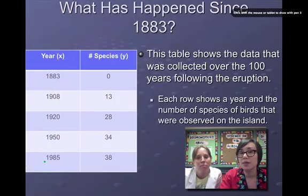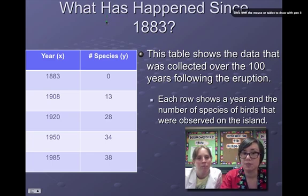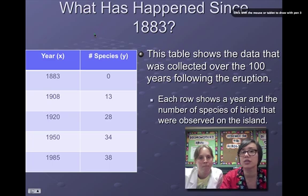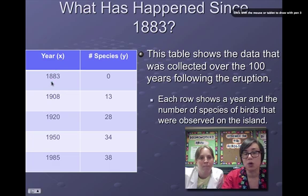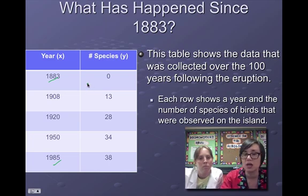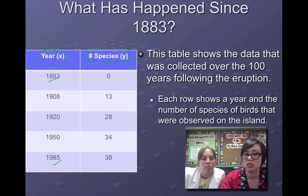Here's a data table. Data tables are our friends. Whenever you're given data in science, it makes it easier to understand what the scientists are trying to share with you. In this particular data table, we're looking as far back as 1883 and as far forward as 1985. We're looking at roughly 100 years worth of data. The data we're looking at shows the number of species that are present for particular birds on the island after the eruption. It's not how many birds there are, it's how many different types of species are present. We have the year on the left, and the number of species on the right.